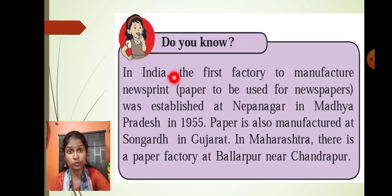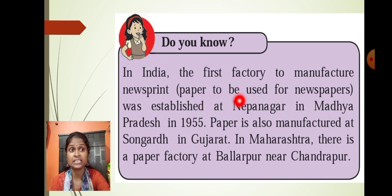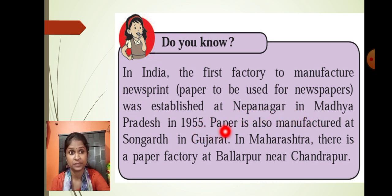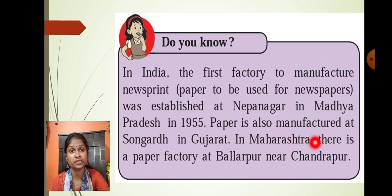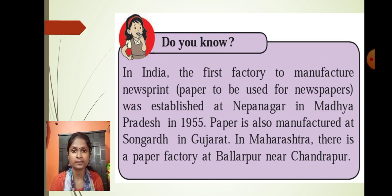The first factory to manufacture newsprint — that is, paper used for newspapers — was established in Nepangarh in Madhya Pradesh in 1955. Paper is also manufactured at Sonagarh in Gujarat, and in Maharashtra there is a paper factory at Ballarpur near Chandrapur. These are the paper factories in India where the manufacturing of paper began, and now the paper industry has expanded to produce in larger quantities.